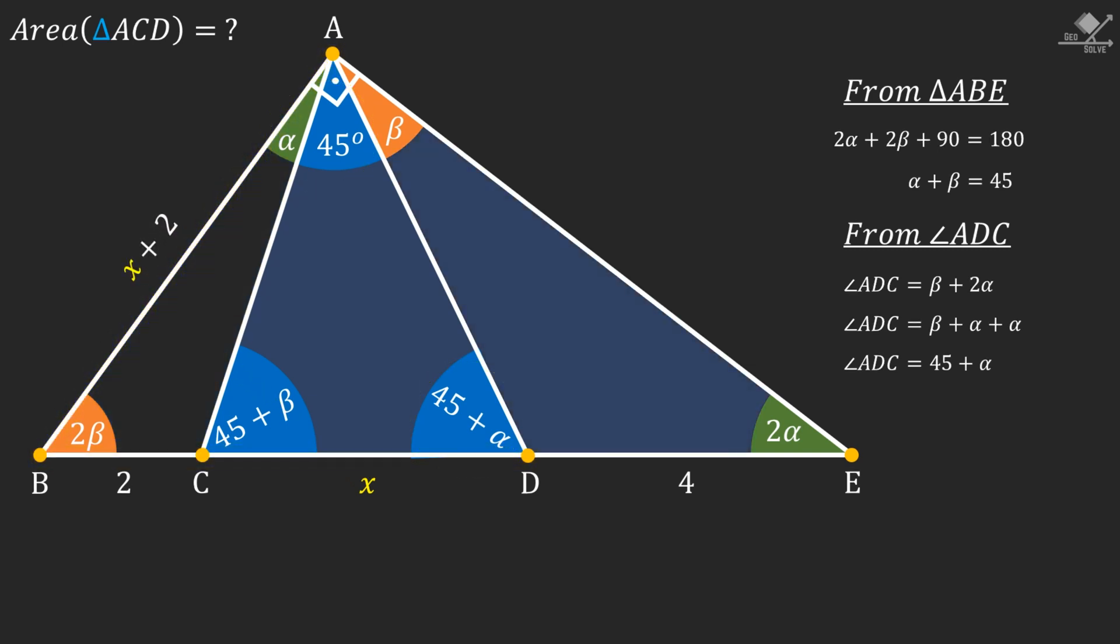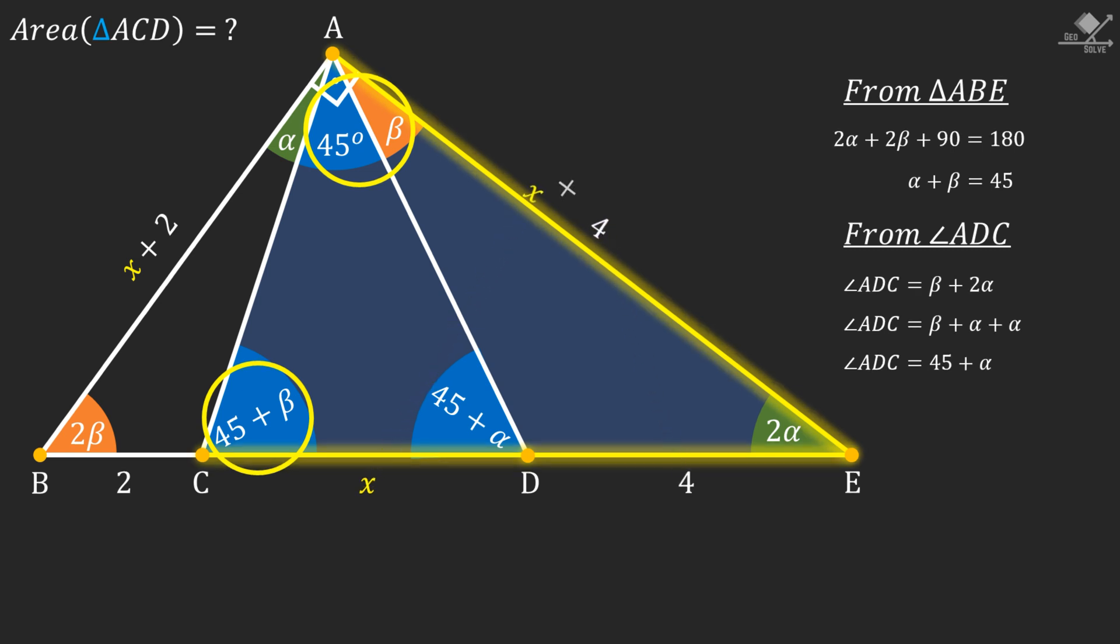Now focus on triangle ACE. Again we will have an isosceles triangle with equal base angles of 45 + β degrees. Therefore these sides should be equal in length. So line segment AE will be x + 4 units.